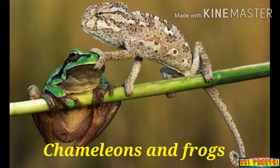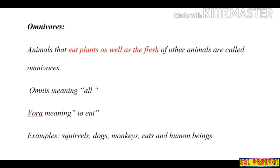Next we move to the third feeding habit — omnivorous. Omnivorous animals eat both plants and animals. Animals that eat plants as well as the flesh of other animals are called omnivorous. The term 'omnivorous' comes from 'omni' meaning all and 'vora' meaning to eat — that is, they eat both plant sources and animal sources.